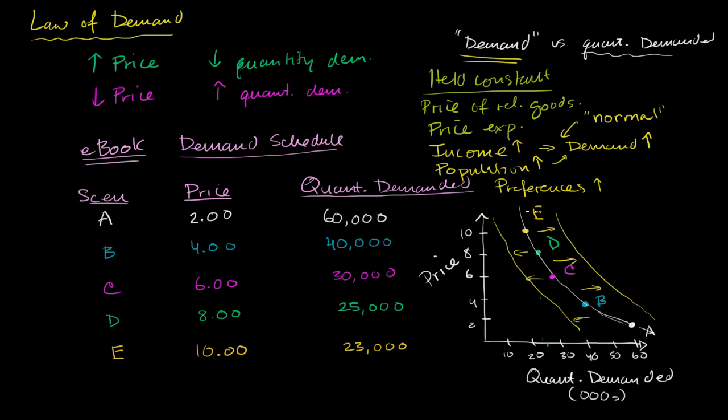If, on the other hand, on that same talk show it turns out that they do an expose on the author having this sordid past and the author plagiarized the whole book, then the demand will go down. The entire curve, regardless of the price point, at any given price point, the quantity demanded will actually go down.